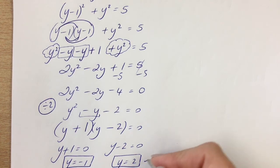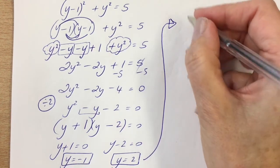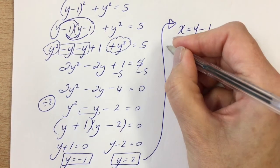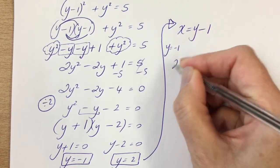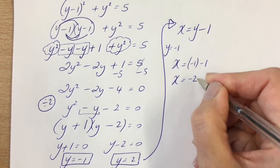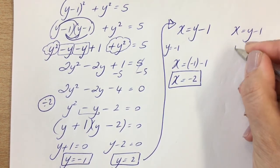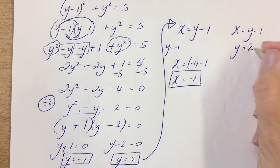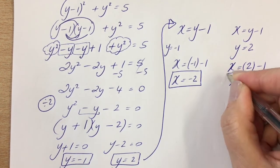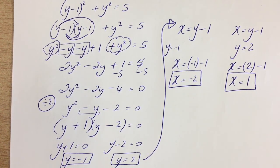Step 4: take the two solutions and sub them back into the linear equation x equals y minus 1. When y equals minus 1, x equals minus 1 minus 1, which is minus 2. When y equals 2, x equals 2 minus 1, so x equals 1. You'll always get two solutions for x and two solutions for y.